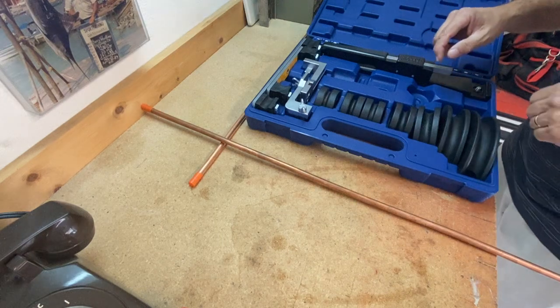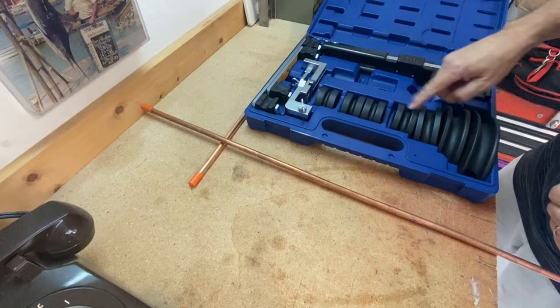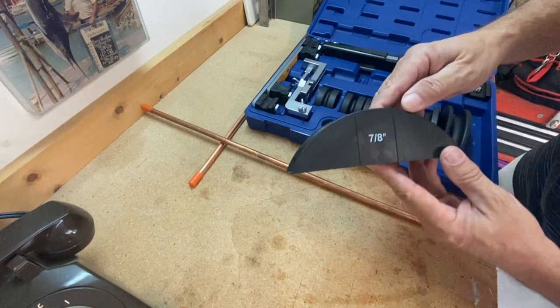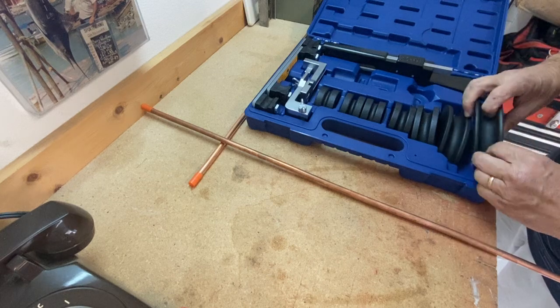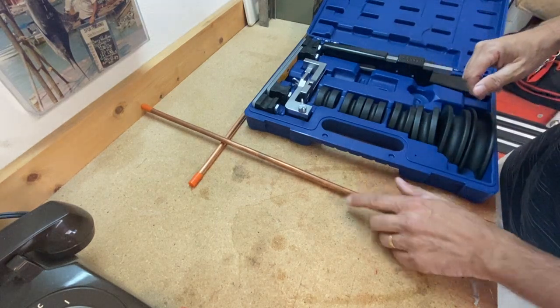This particular set is good for sizes from a quarter inch all the way up to seven-eighths. So I can bend seven-eighths tubing all the way down to quarter inch. I've got some three-eighths tubing here we're going to bend today.